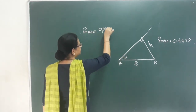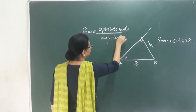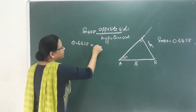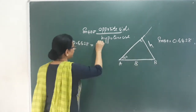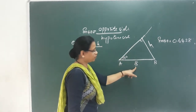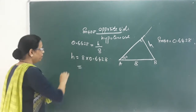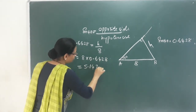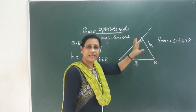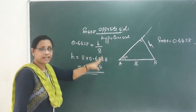Sin 40 equals opposite side by hypotenuse. The value of sin 40 is 0.6428. Opposite side is H, hypotenuse is 8. So H equals 8 into 0.6428, which equals 5.1424. This height is the shortest height — the minimum length of that side.